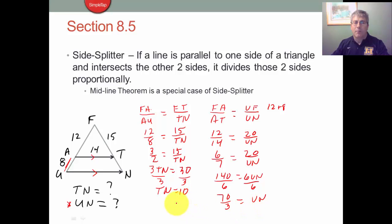And we get 70 over 3 equals UN, which is, if you like mixed numbers, that's going to be 23 and one-third.